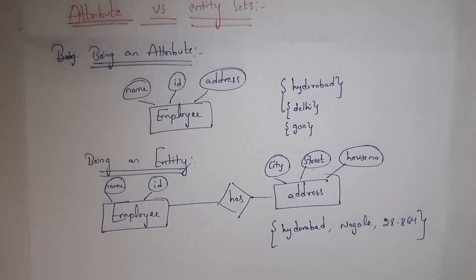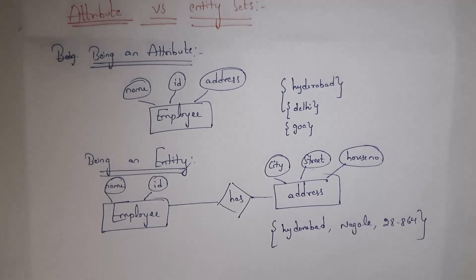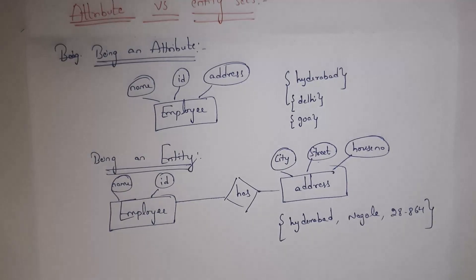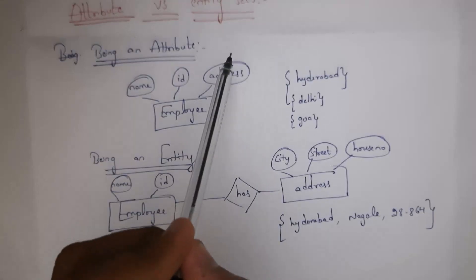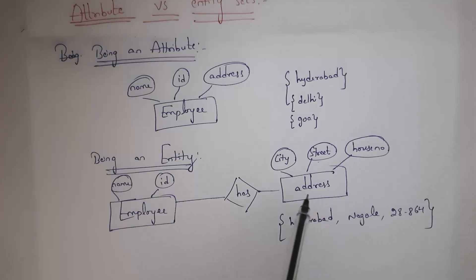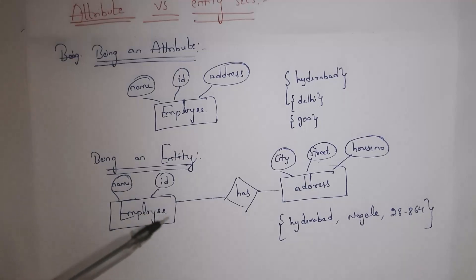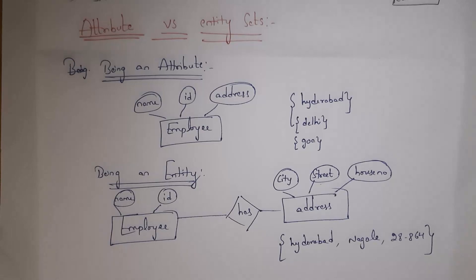But if I don't want to enter a single address and instead want to enter a complete address like city Hyderabad, street Nagol, and house number 28-864, then what I will do is select address as an entity. Inside the address entity, I will create three attributes: city, street, and house number. An entity is nothing but a table name, whereas an attribute is nothing but column names. Either you can select address as an attribute or as an entity — it is completely the designer's choice.